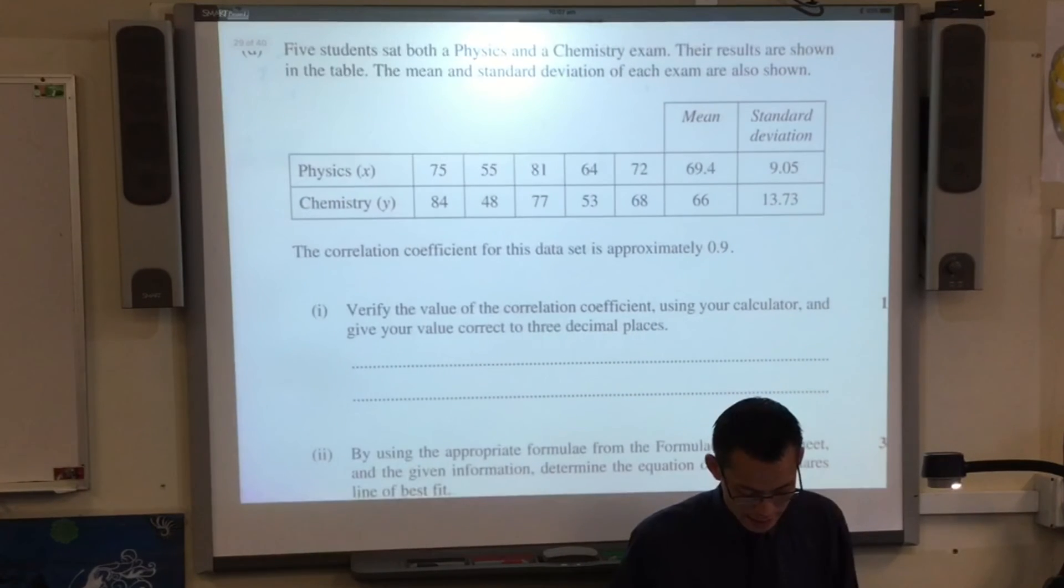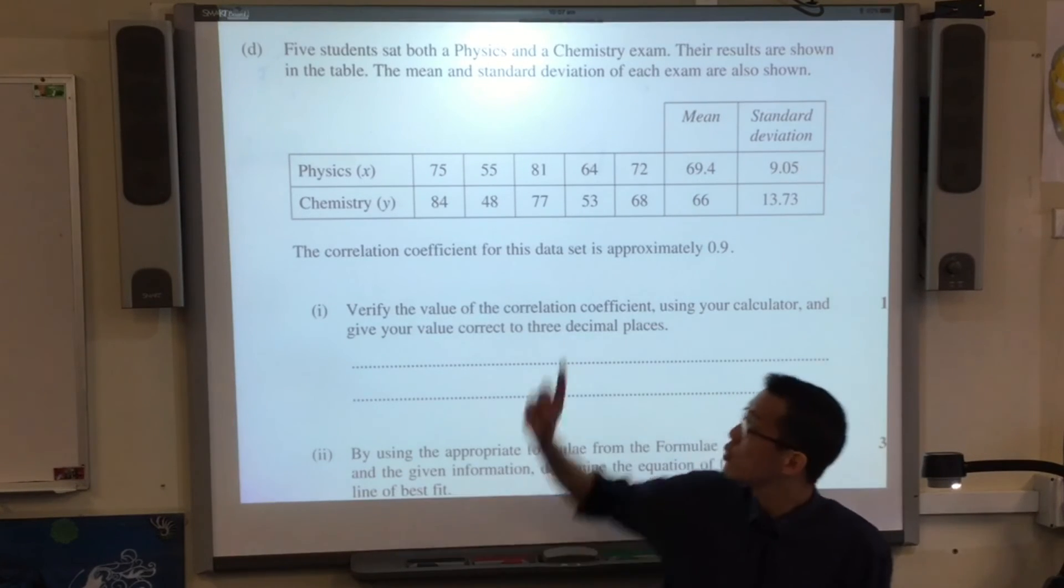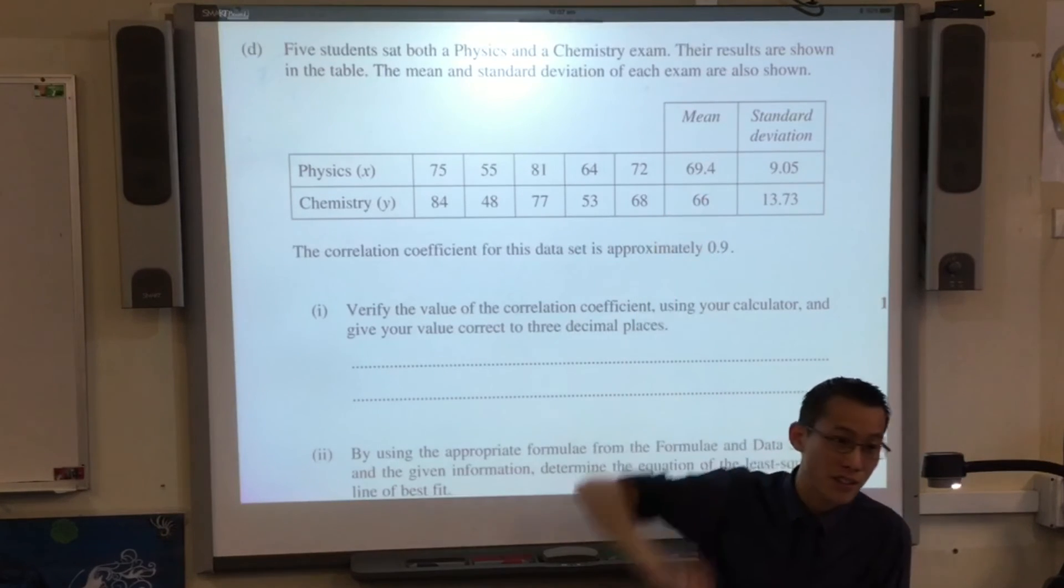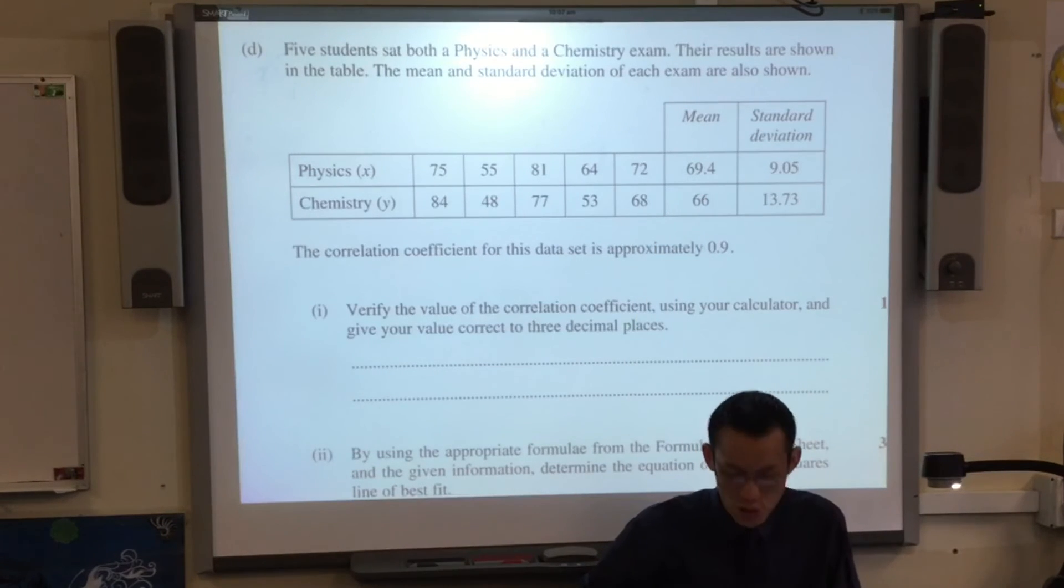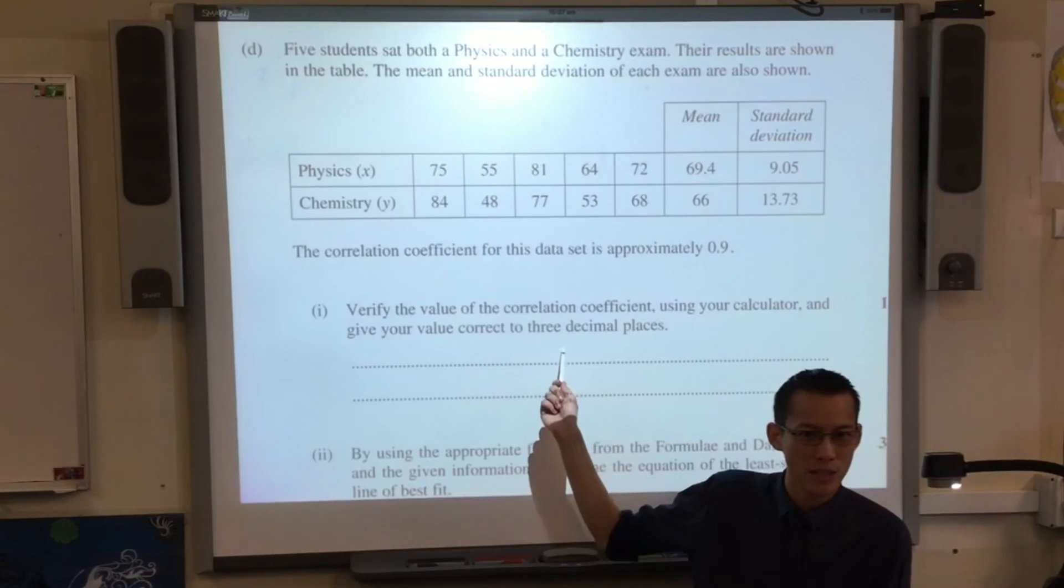See how, here on the question, part one says correct to three decimal places. That is highly accurate. Have a look at the data provided here. How many decimal places do you see? One, two, and zero. Now, if you use these in part one, you actually get the answer wrong. You don't get 0.907, which is the answer. You get 0.906. You're off by the third decimal place, but that's kind of the decimal place they're looking for.